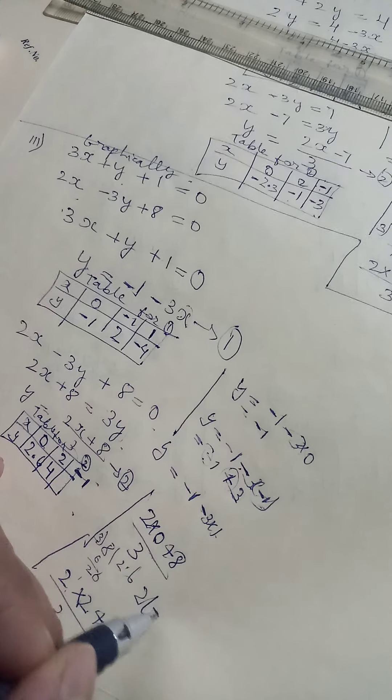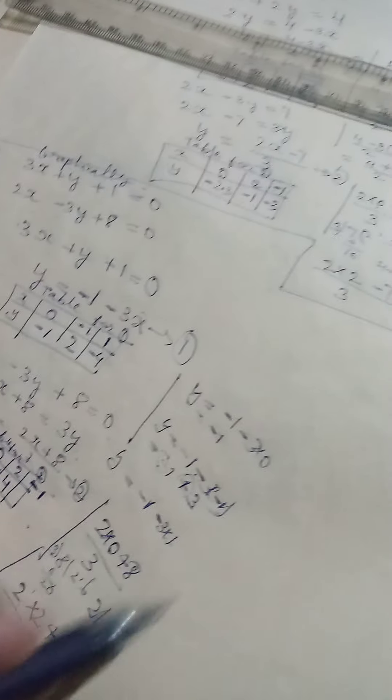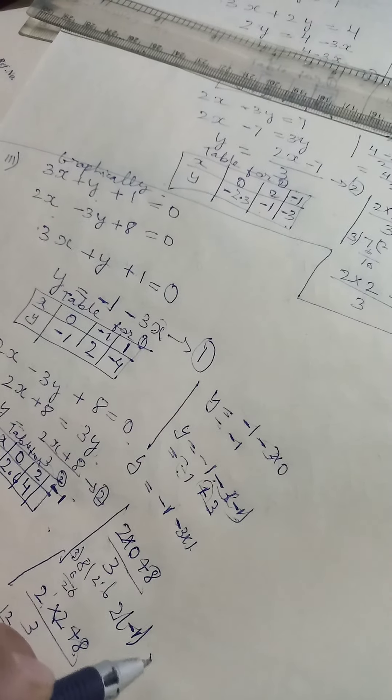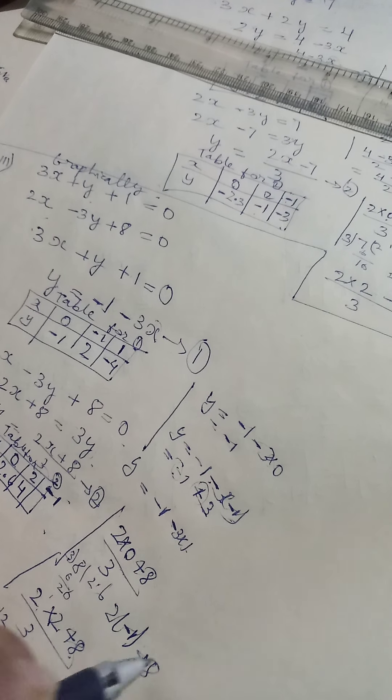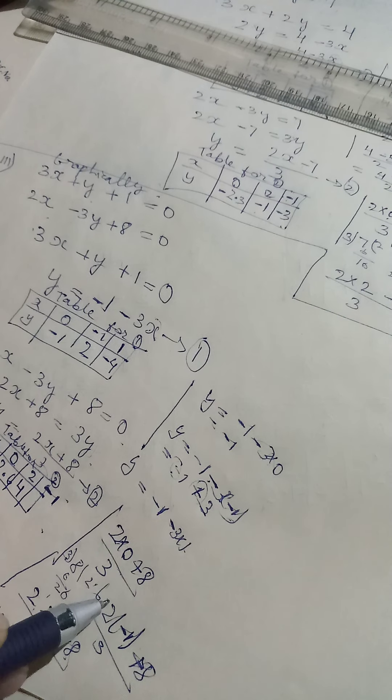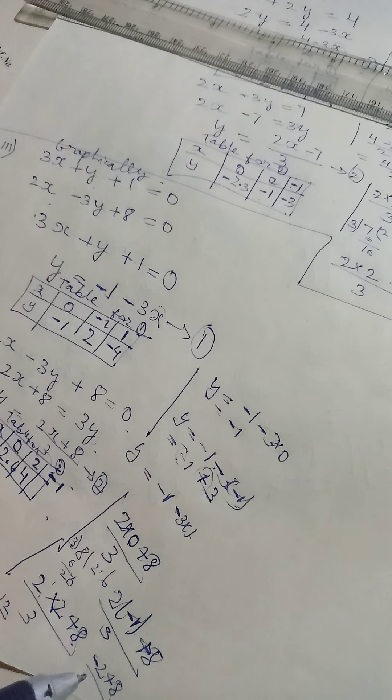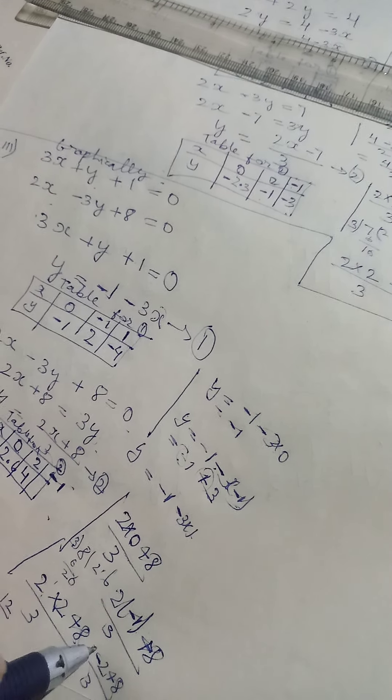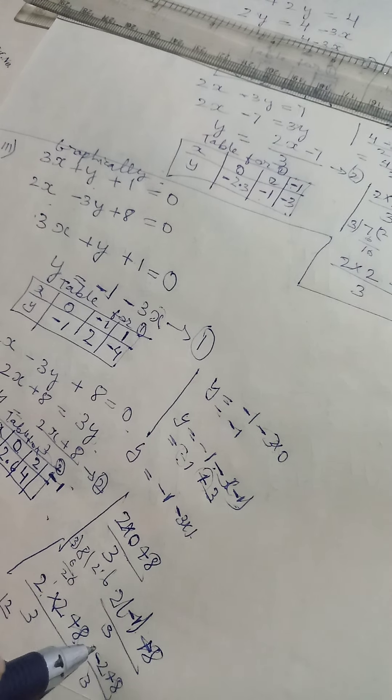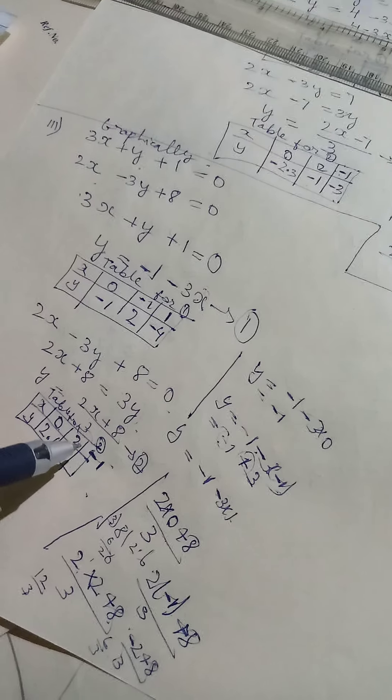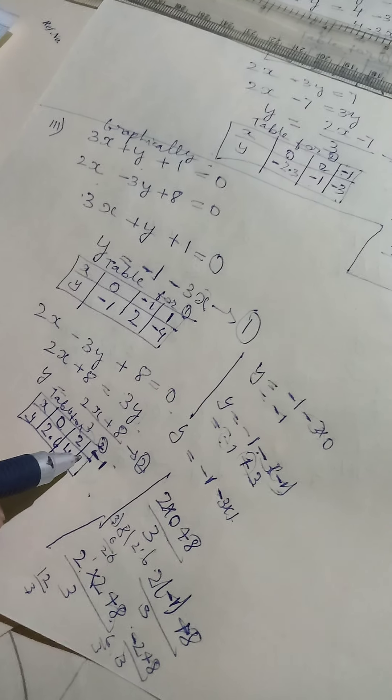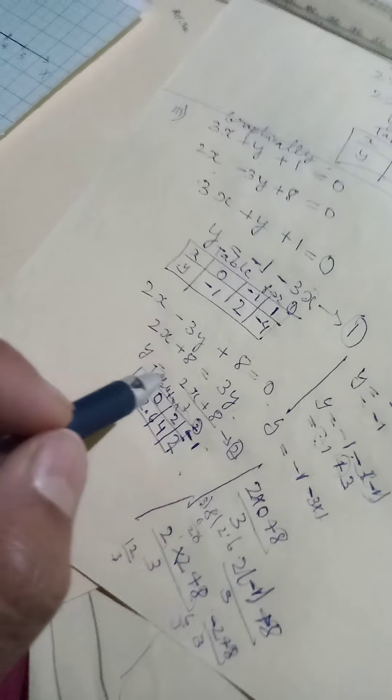And next one, in place of X, we put minus 1. So if you have minus 1, better put inside brackets so that there will be no confusion. Okay. So 2 into minus 1 will be minus 2 plus 8. 1 plus 1 minus. So what to do? We have to minus. 8 minus 2 will be 6. So 6 divided by 3, we get 2.